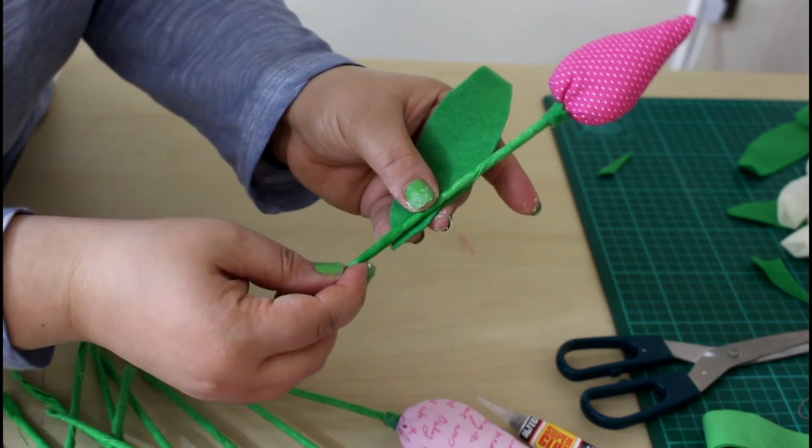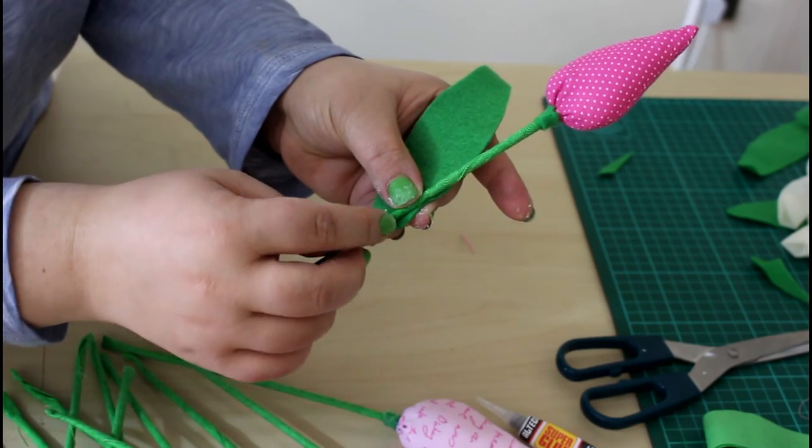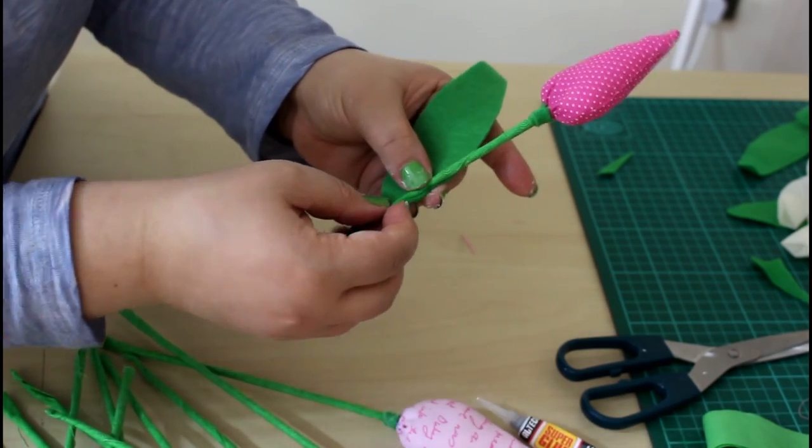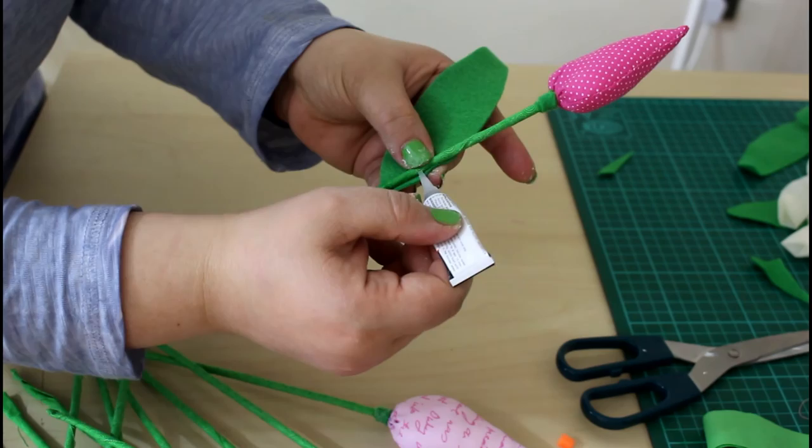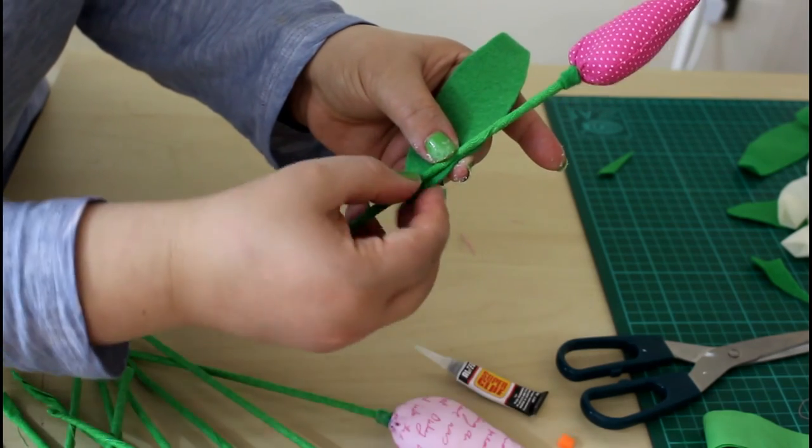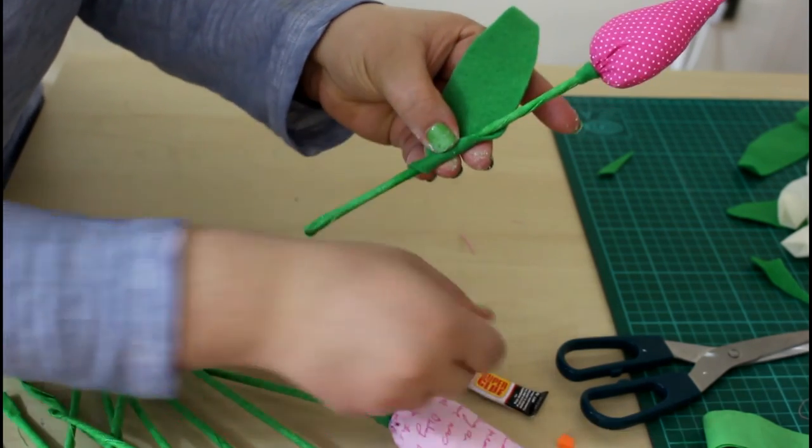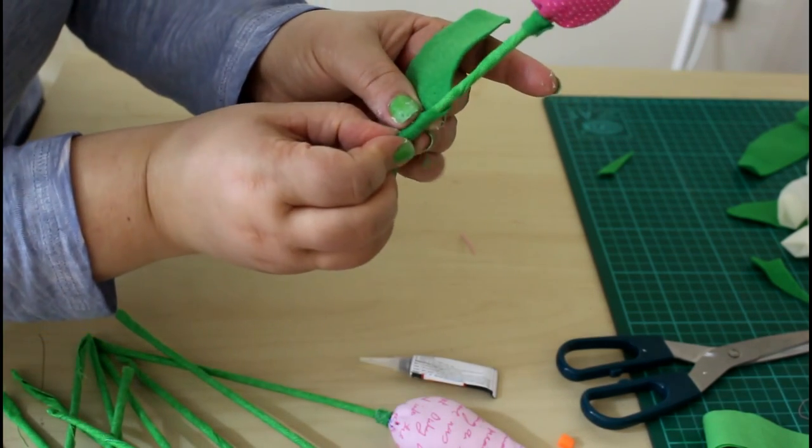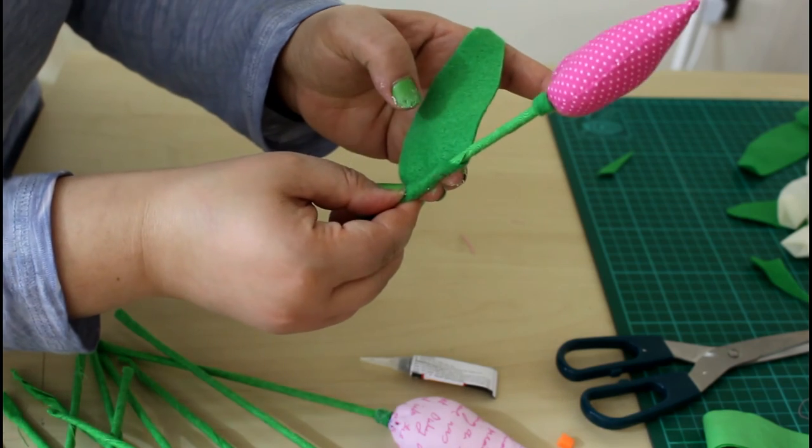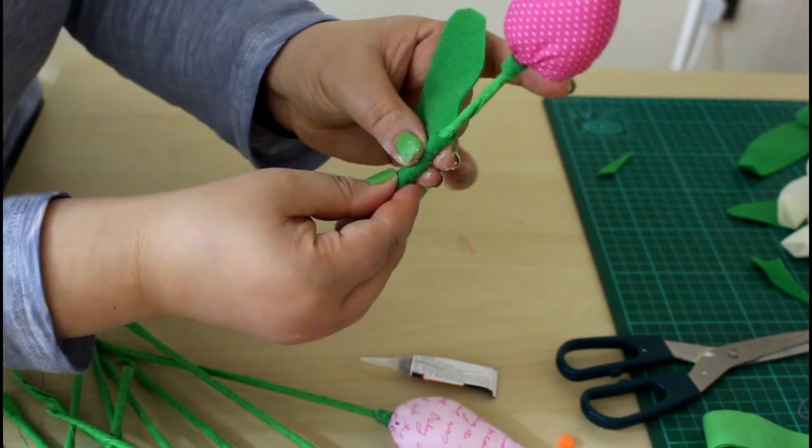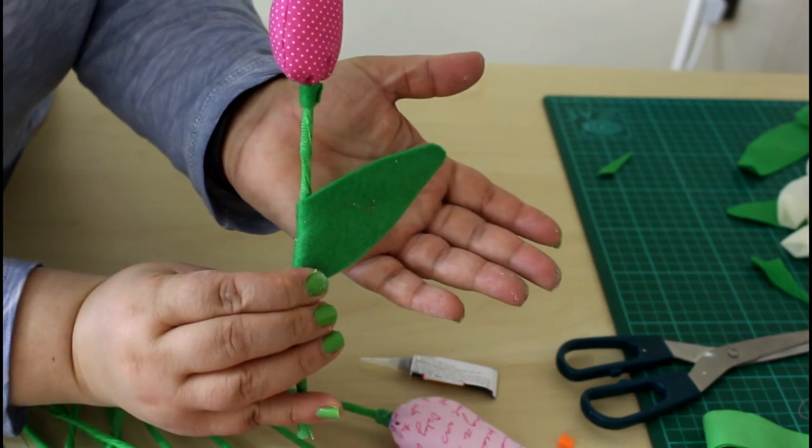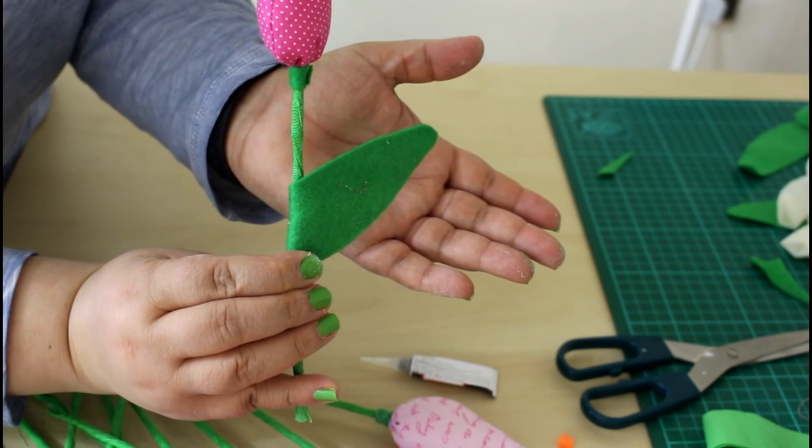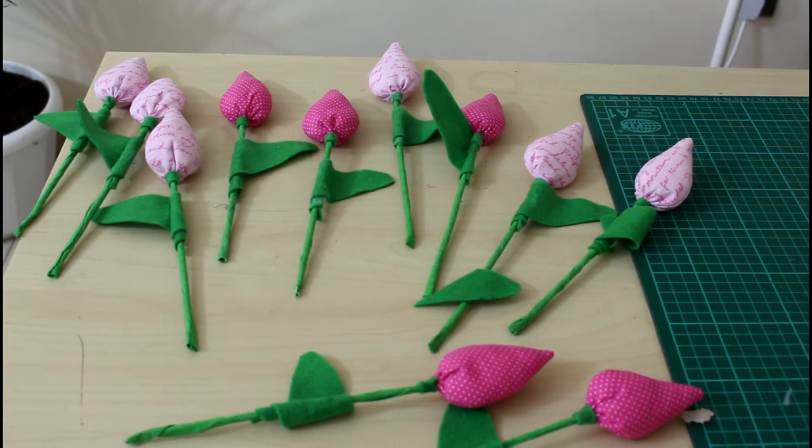Place the leaf a little bit below the middle of the stem. Apply some glue, wrap a little bit, apply more, and wrap tightly. Let them all dry.